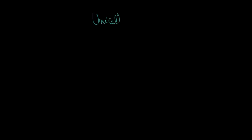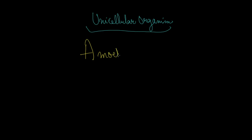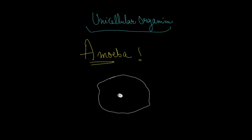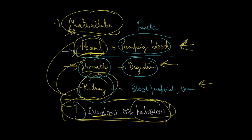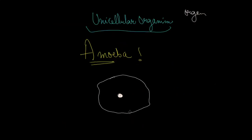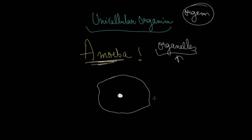Now if you take a unicellular organism, the most important example is amoeba. Unicellular organism means only one cell — it will have a nucleus. In our body we have organs: the heart is an organ, the stomach is an organ, the kidney is an organ. This is a multicellular organism. In a unicellular organism there is only one cell, so the small organs inside the single cell are called organelles.